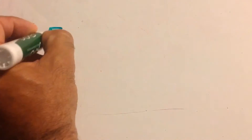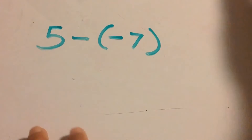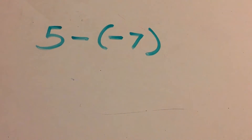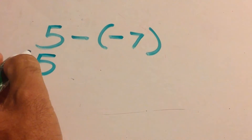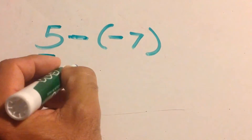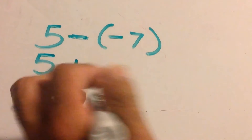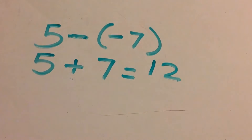What if we have five minus negative seven? With Keep Change Change: keep the five, change minus to plus, change negative seven to positive seven. Now you have five plus seven, which equals twelve.